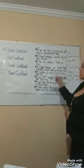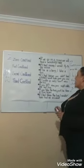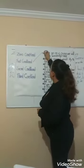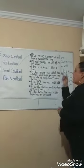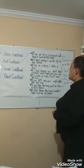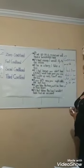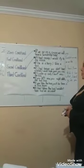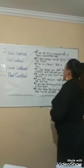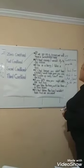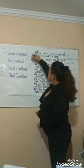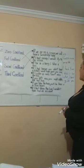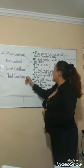So the first statement says: "If we go on a cruise, we will have a wonderful time" — the correct answer is the first conditional. The next: "If I have money, I would fly to the moon" — this is the second conditional because it can be not true. "If I am in a hurry, I take a taxi" — this is the zero conditional because it can be true. "If I had known you didn't have a ticket, I would have given you one" — this is the third conditional.